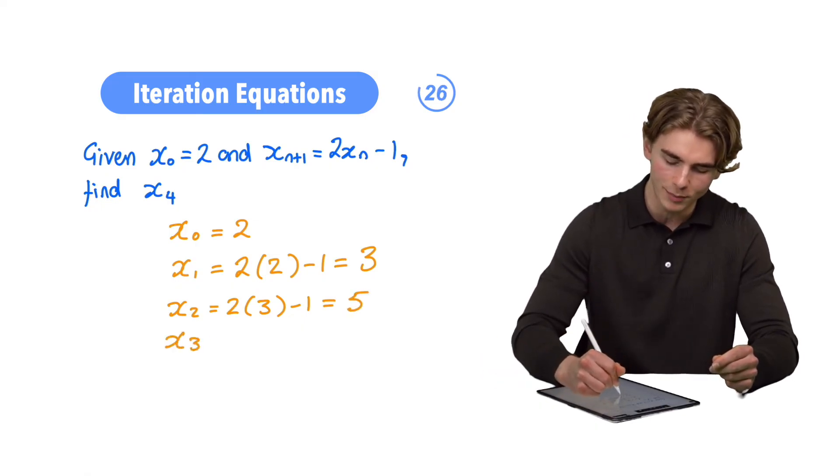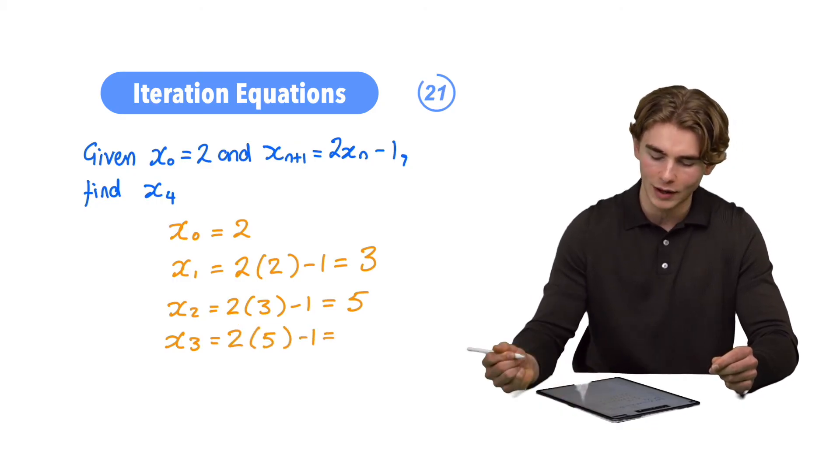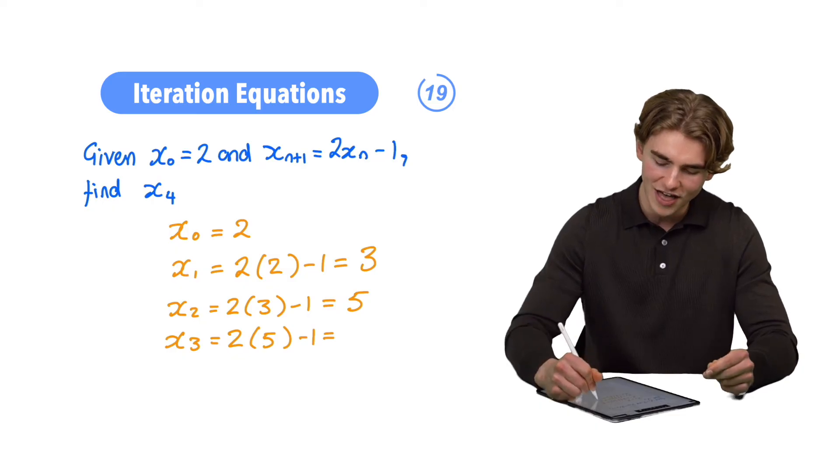What about x3? This time, we're going to plug x2 in. x2 is 5, so we have 2 times by 5, and then we take our 1 away. 2 times by 5 is 10 minus 1, that's going to give us 9.